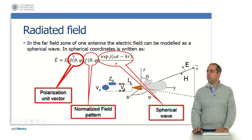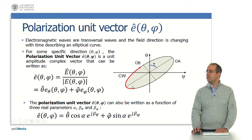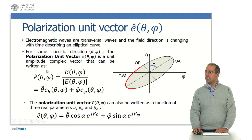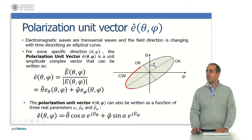We will concentrate on the polarization unit vector. Electromagnetic waves are transversal waves and the field direction is changing with time, describing an elliptical curve. For some specific direction in function of theta and phi, the polarization unit vector is a unit amplitude complex vector that can be written as the electric field divided by the absolute value of the electric field. We can also define it in terms of theta and phi components, or as a function of three real parameters: alpha, beta-theta, and beta-phi.